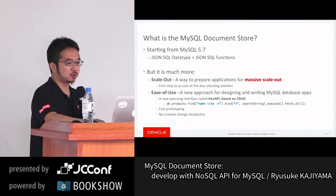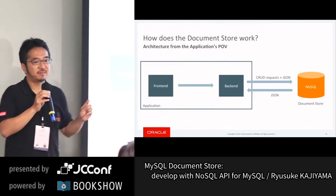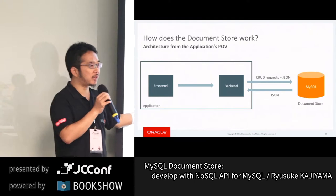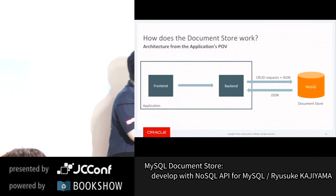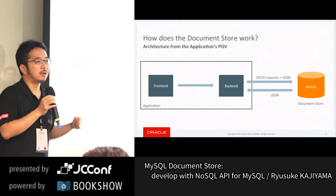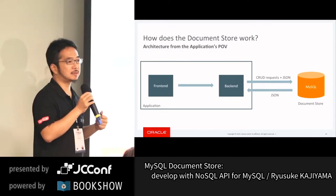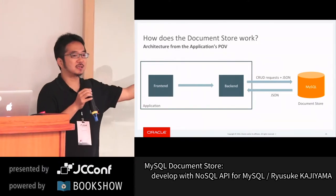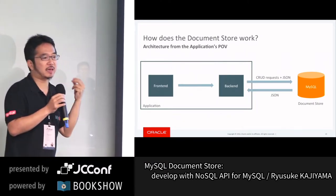Before showing source code, let me briefly talk about the overview of XDEV API and how the Document Store works. From the application point of view — front-end, presentation layer, and back-end including business logic — it talks with MySQL using CRUD API or CRUD requests, and you may send JSON documents. Results come back in JSON format, not as a result set. In traditional RDBMS JDBC application development, what you send is a SQL statement and what you get is a result set. But in Document Store, what you send is a request plus JSON, and you get JSON as a result.